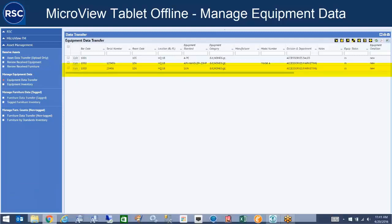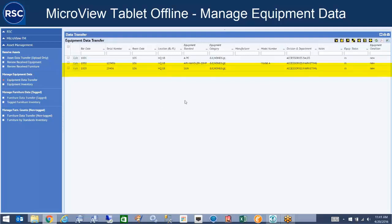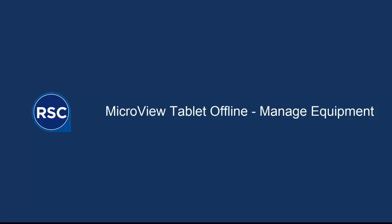We can see that the changes made out in the field — the addition of the serial number and the movement to a new building, floor, and room — have been completed. The record is ready to put into inventory at this point. That concludes this demonstration.